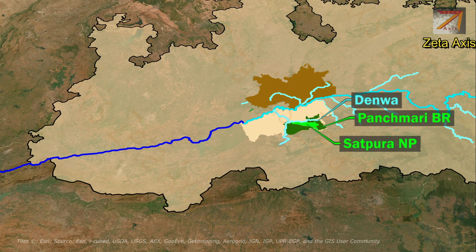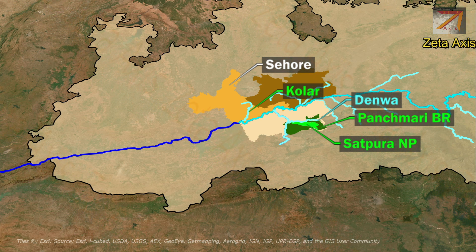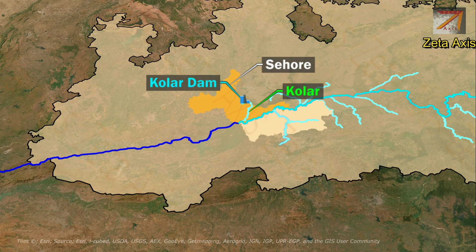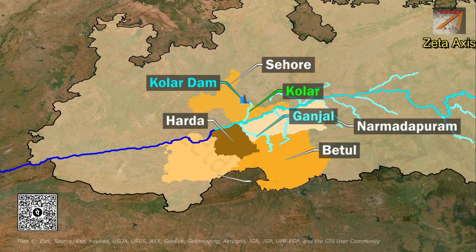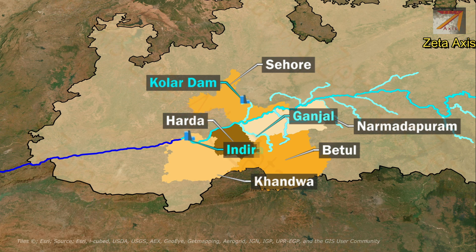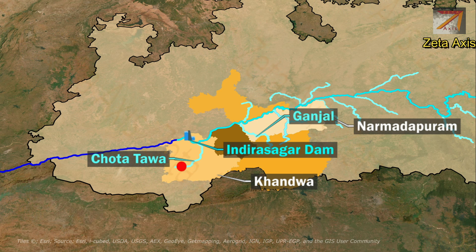Flowing further west, Narmada river meets the Kolar river in Sehore district. The Kolar river arises in the Vindhya range of Sehore district and flows southwesterly to meet the Narmada; Kolar Dam is constructed on it in Sehore district. Narmada continues west to meet the Ganjal river on the border of Narmadapuram and Harda district, with the Ganjal originating from Betul district. From Harda, the river enters Khandwa district where Indira Sagar Dam is built on the Narmada. In Khandwa district, Narmada also meets the Chhota Tawa river, which originates near Khandwa city.